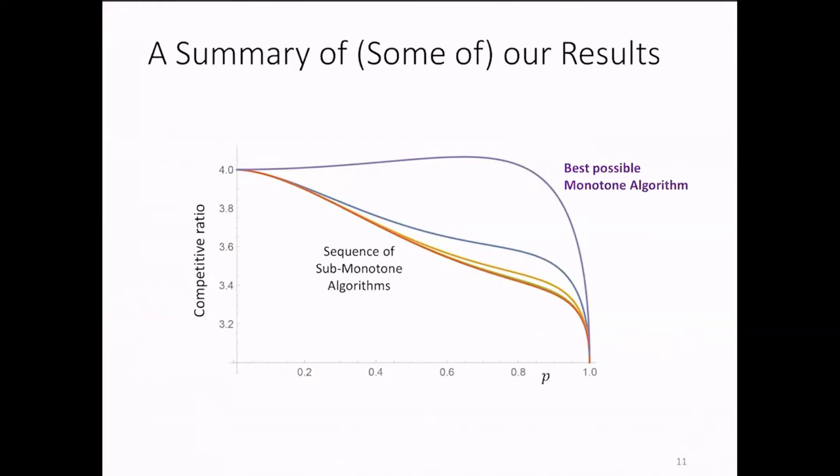The graph here depicts the performance, the competitive ratio of various algorithms as a function of p. First, with purple color, you see the competitive ratio of the best possible monotone algorithm. Notably, its performance is not even monotone. Maybe a hint for that such an algorithm cannot be optimal.